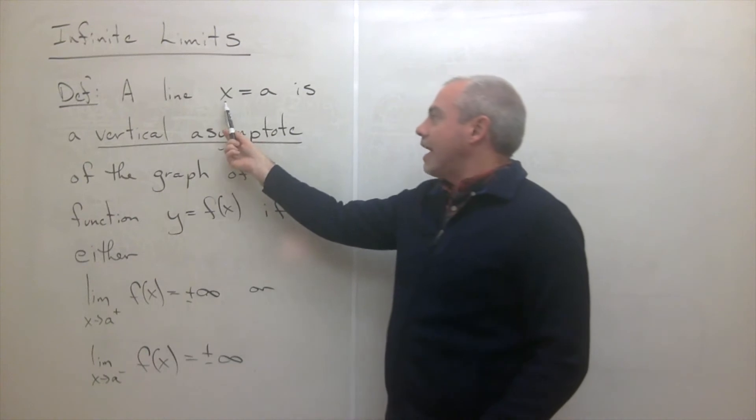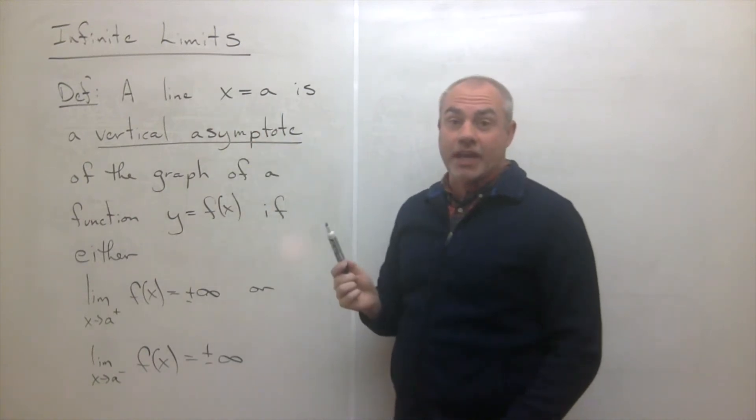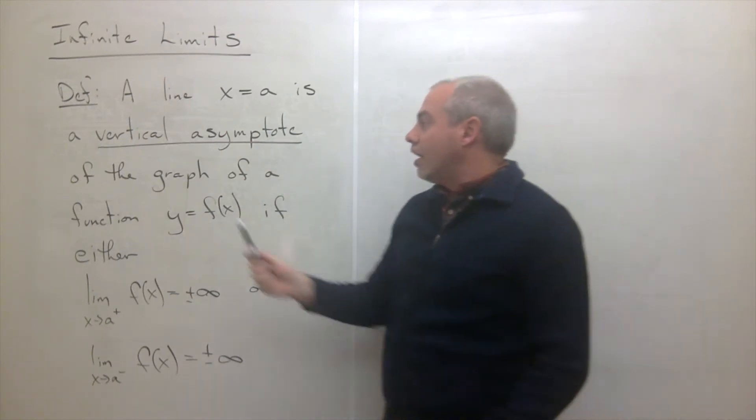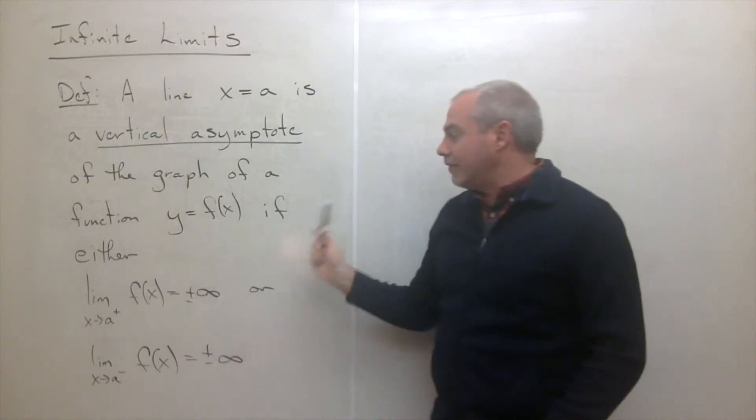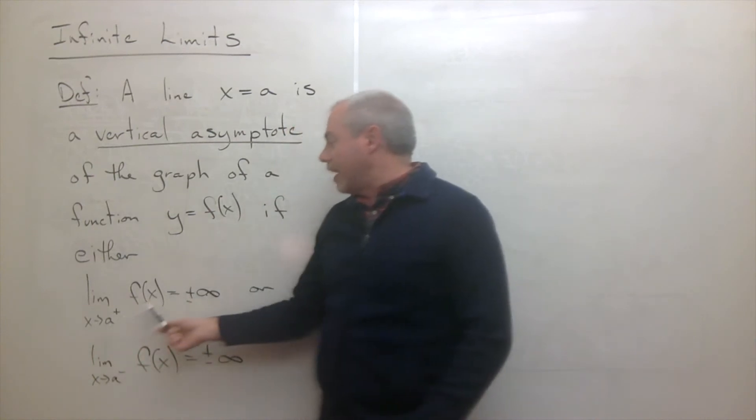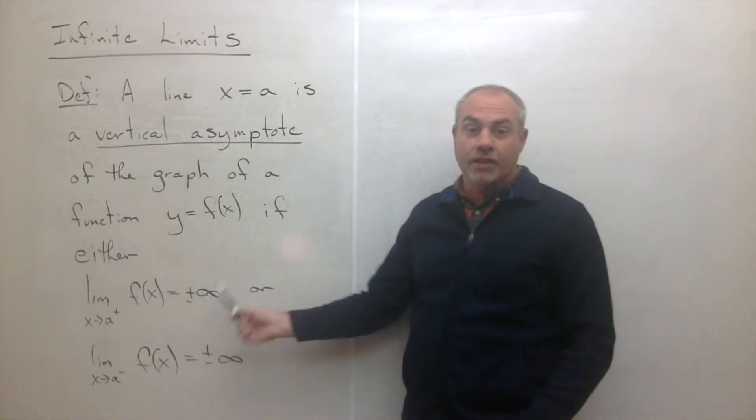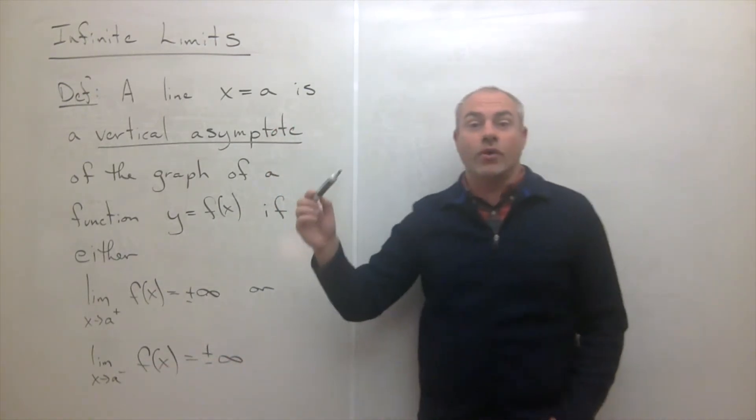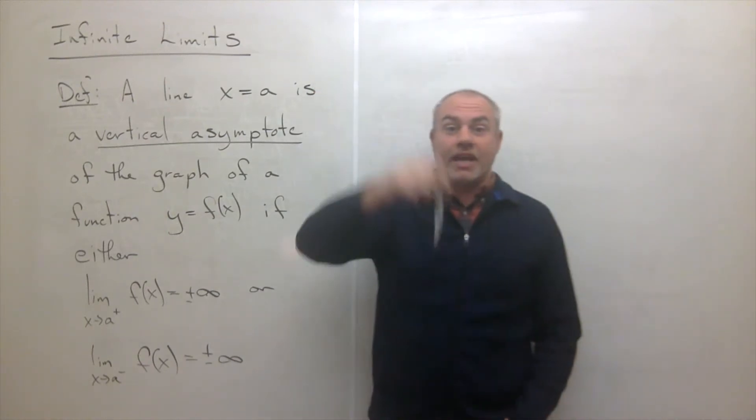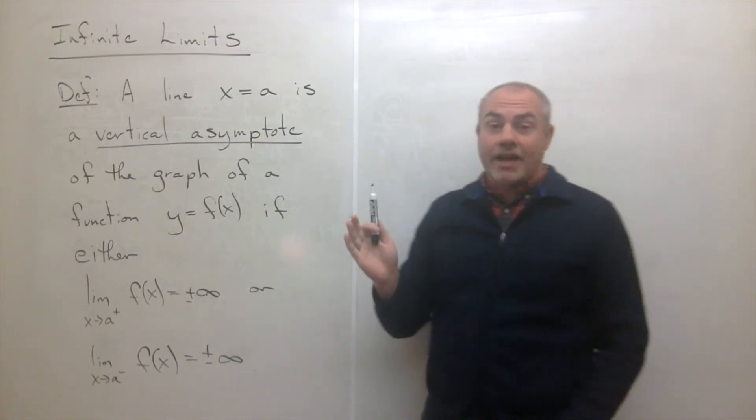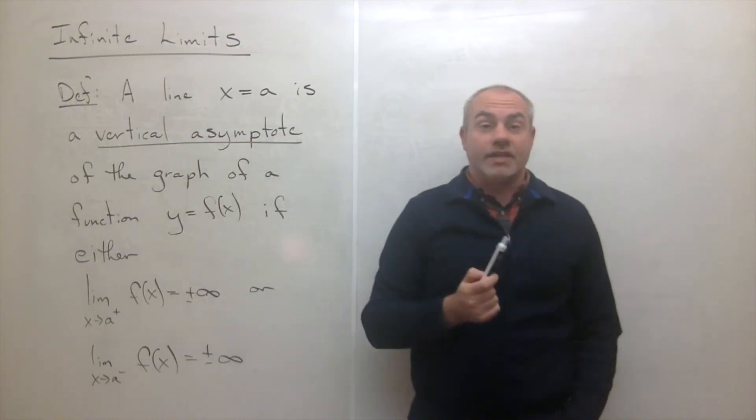Let's look at this definition of vertical asymptote. What it means for a line x equals a, so all vertical asymptotes have this form, x is equal to some constant a. It's a vertical asymptote of the graph of a function if either the limit as x goes to a from the right of f(x) is plus or minus infinity, or the limit as x goes to a from the left of f(x) is plus or minus infinity. So if we have a limit going up to infinity or down to negative infinity at a point, then we say that that value x equals a is a vertical asymptote of that function.